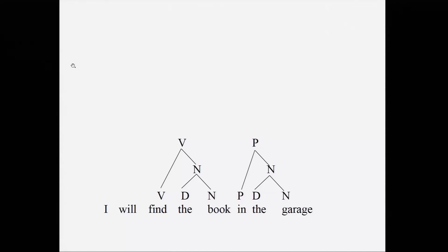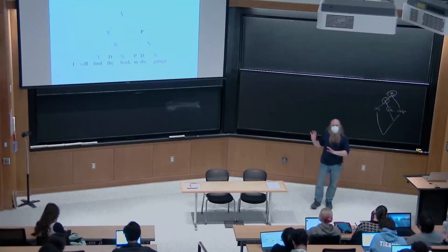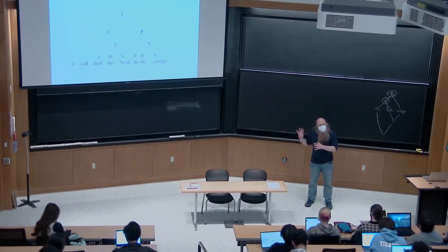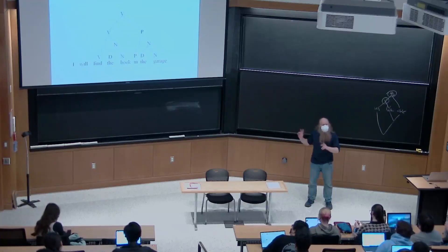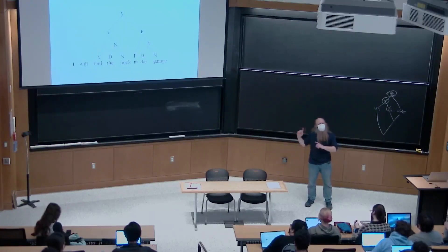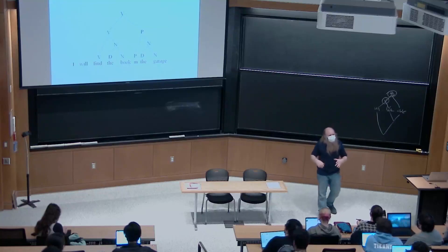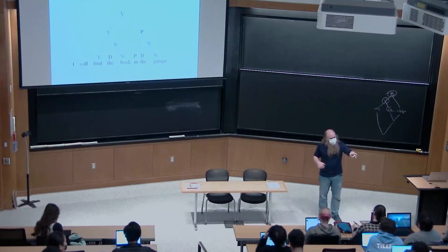Similarly, we'll merge 'find' first with 'the book' and then finally merge those two things together to get the structure for that much of the sentence. We'll stop here for now and build the rest in a second. When I showed this tree last time I said 'is anybody alarmed?' and several of you raised your hands — because in fact this is only one of a couple of possible structures this sentence can have. We're going to spend a lot of time talking about that today.